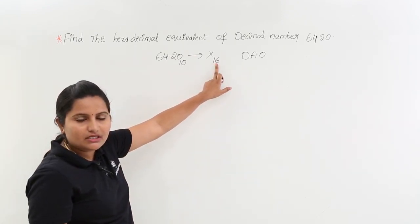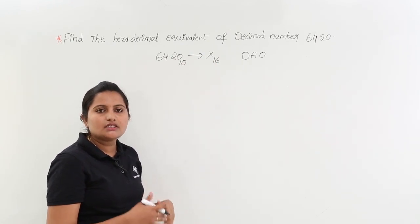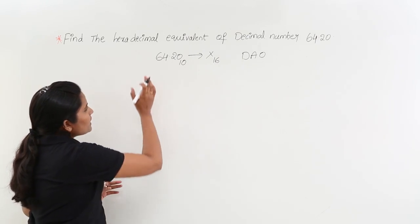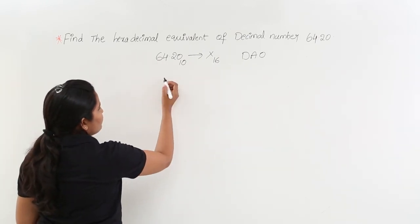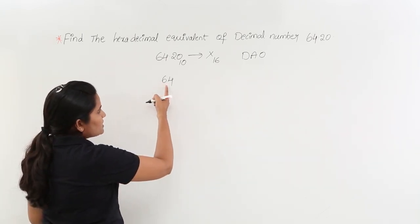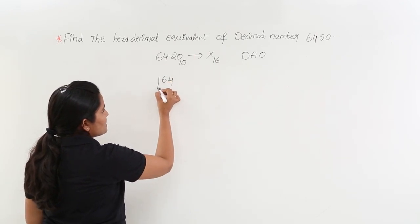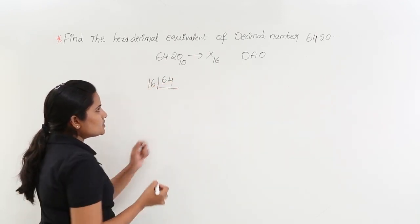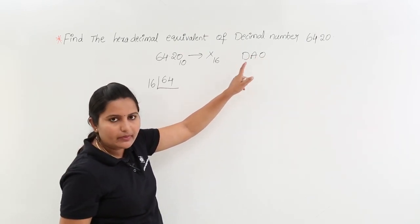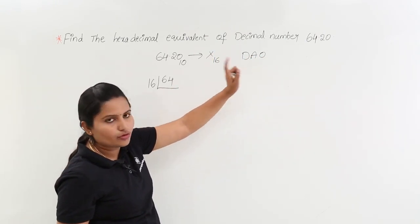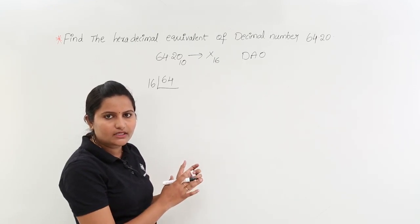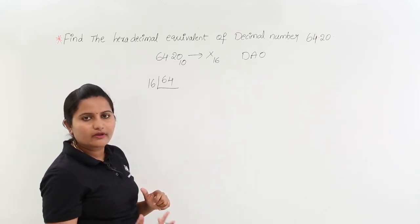Here our destination number system is 16. The destination number system means the system to which we are converting the number. For the point-before digits, that is 64, we perform successive division with respect to 16. Decimal to any other — take division. For point-after digits, you perform multiplication.